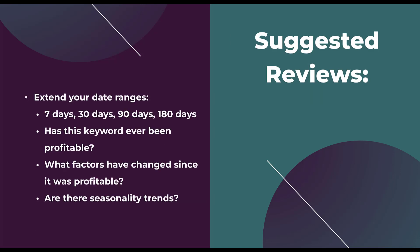The first thing I want you to do is extend your date range. Are you looking at only a recent snapshot of performance, or have you looked over a longer period of time? Have you looked at the past 7 days, 30 days, 90, 180? What are the different performance trends that you see? Has that keyword ever been profitable on any level of spend, or has it always been unprofitable? And how unprofitable has it been — has it always been at three times the cost per lead goal, or at one point was it only at maybe one and a half times? Can you determine any of the factors that have changed since it was profitable? Are there any seasonality trends that you need to keep in mind that might be causing you to analyze performance more harshly right now than you would over a longer-term view?